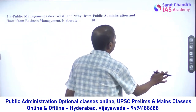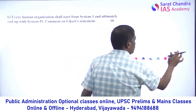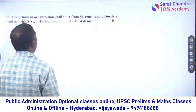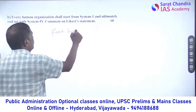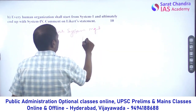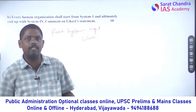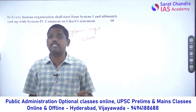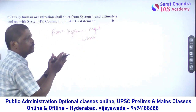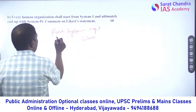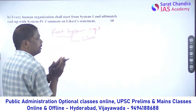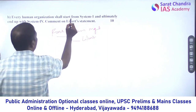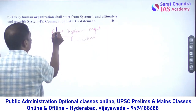The second question involves Rensis Likert's four system management. The locus of the question is about four different styles of leadership or management. The question states that every human organization shall start from system one and ultimately end up with system four. We are asked to comment on this statement.